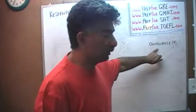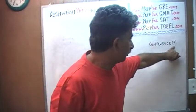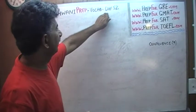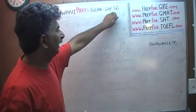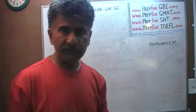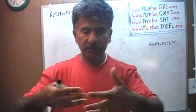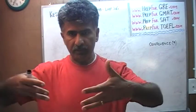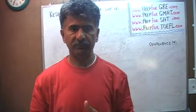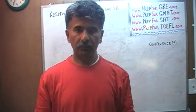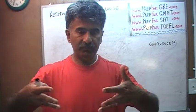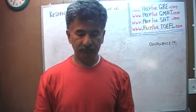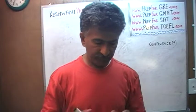If you want to learn the word properly, go and type in Keshwani-prev-vocab-d9 and you will learn it properly. Confluence simply means coming together. If two rivers come together and merge into one, that's called confluence. So sometimes there are confluences of ideas where there is a theme and they all come together, and sometimes I have words which are simply discrete.